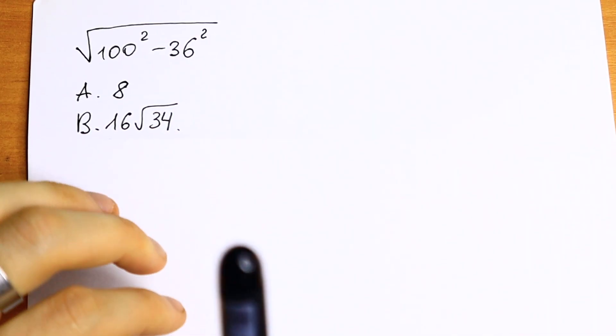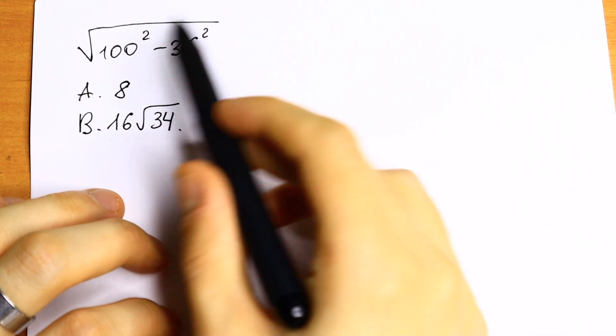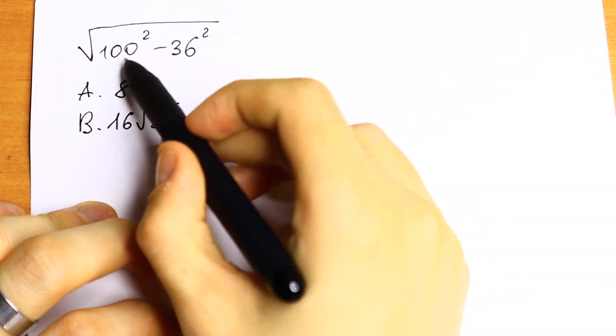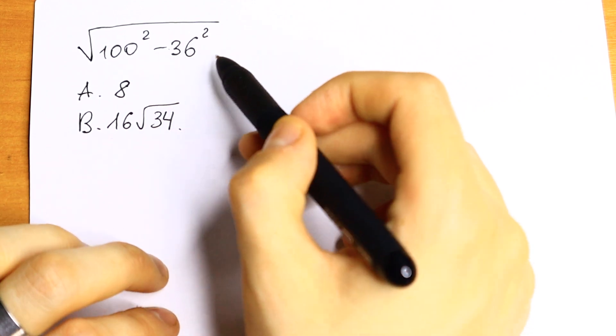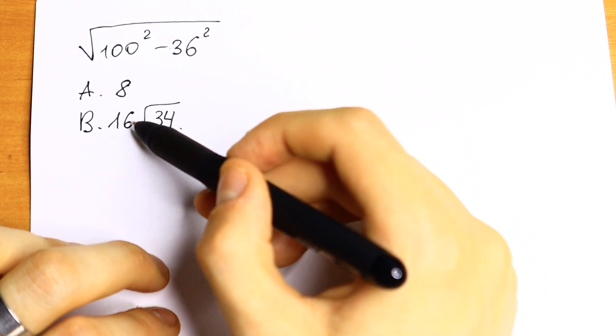Hello everyone, welcome back to MathMode. Today we have an interesting algebra problem with radicals and powers. We have square root of difference of squares, so we have 100 squared minus 36 squared, and here we have two options.